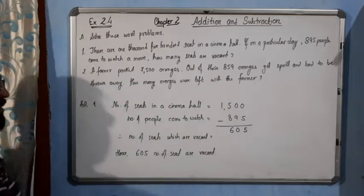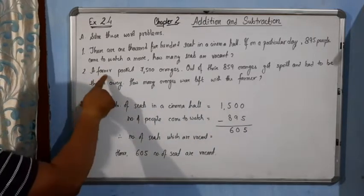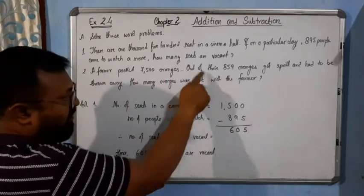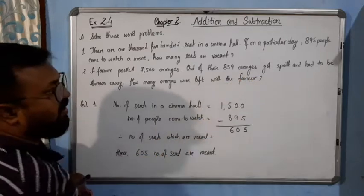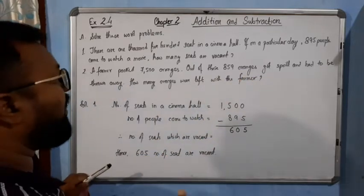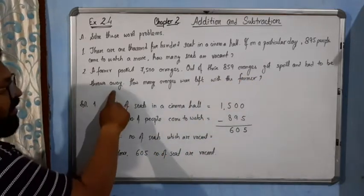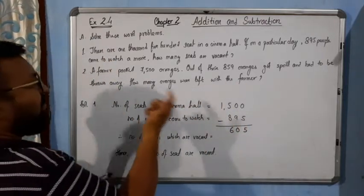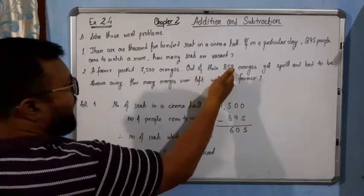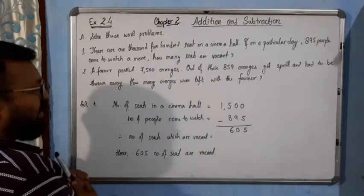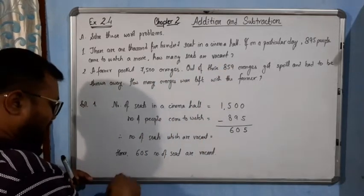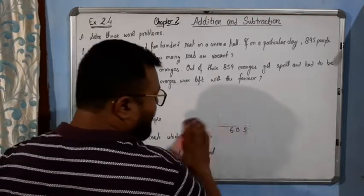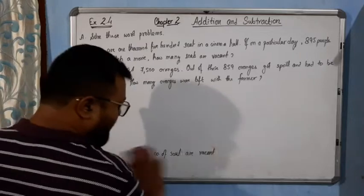Now come to the next question. A farmer packed 7500 oranges. Out of these, 859 oranges got spoiled and had to be thrown away. So how many oranges were left with the farmer? Very simple. We will subtract 859 from 7500. Let me erase this answer so that I can write the answer of question number 2.